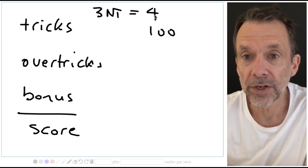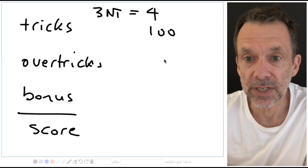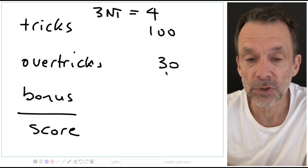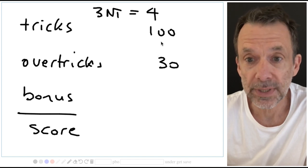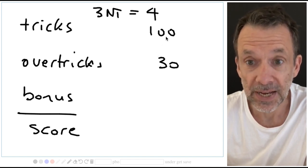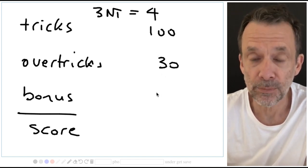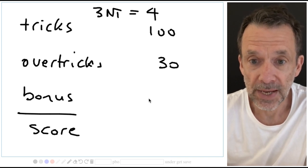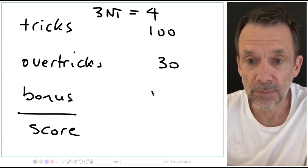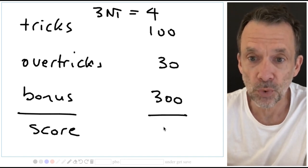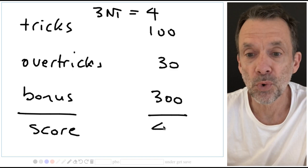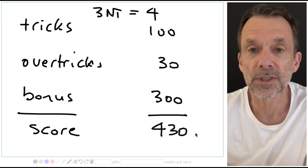I made one overtrick, one extra trick so 30 points for the overtrick. Did our trick points add up to 100 or more? Yes they did, exactly 100. So we get the game bonus. Now on that hand I was not vulnerable so the game bonus would be 300 points. Total score for three no trumps making four not vulnerable, 430 points.